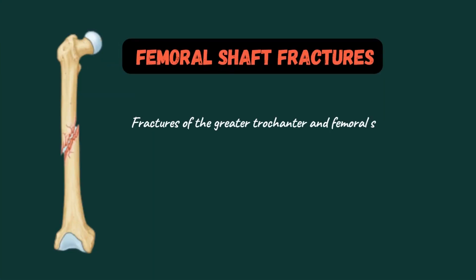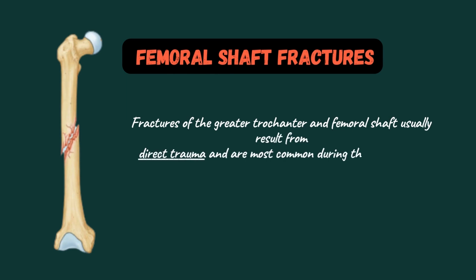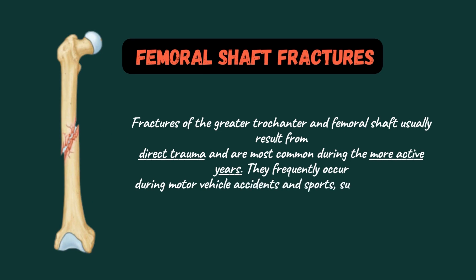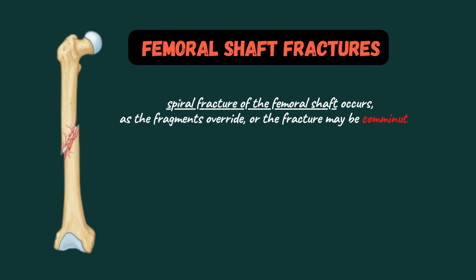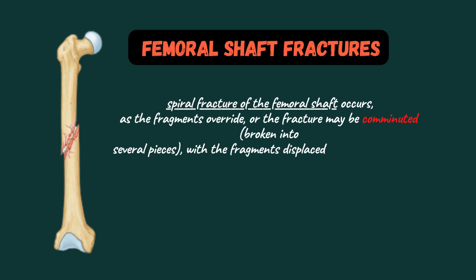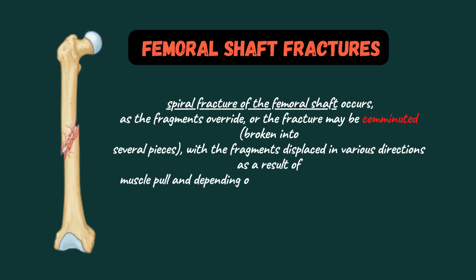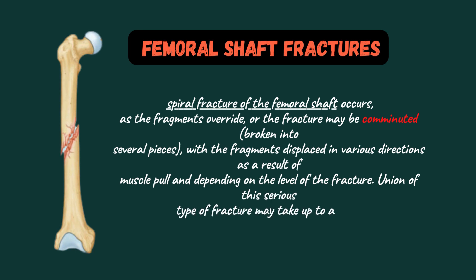Next we will discuss femoral shaft fractures. Fractures of the greater trochanter and femoral shaft usually result from direct trauma and are most common during the more active years. They frequently occur during motor vehicle accidents or sports such as skiing and climbing. A spiral fracture of the femoral shaft occurs as the fragments override, or the fracture may be comminuted — broken into several pieces with fragments displaced in various directions as a result of muscle pull.